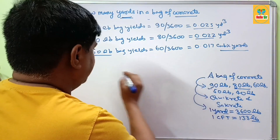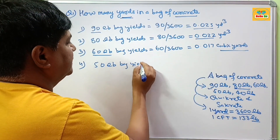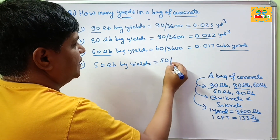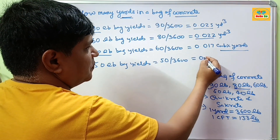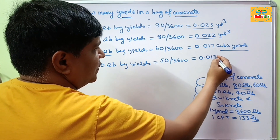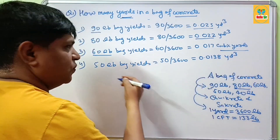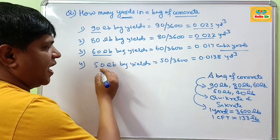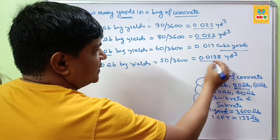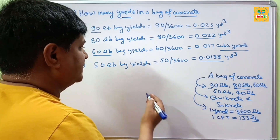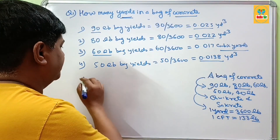For a 50 lb bag yields: 50 divided by 3600 comes out to about 0.0138 cubic yards. The answer to how many yards are in a 50 lb bag of concrete is 0.013 cubic yards.